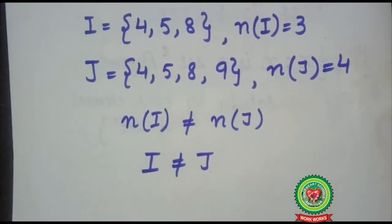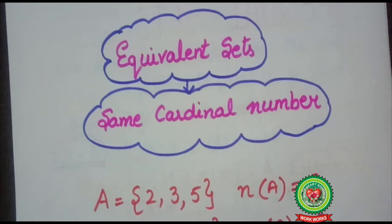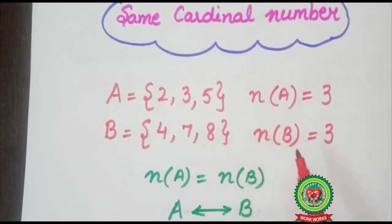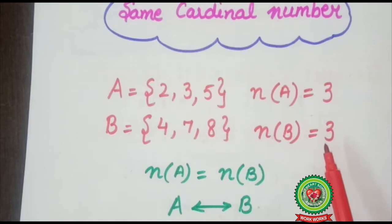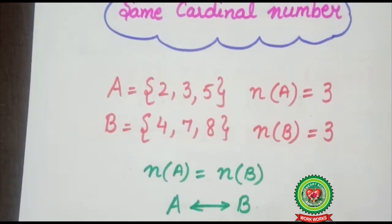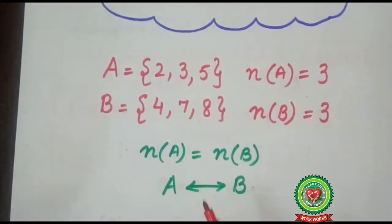Now let's look at equivalent sets. What are equivalent sets? Equivalent sets are sets which have the same cardinal number. In equal sets the elements should be the same, but in equivalent sets only the cardinal number needs to be the same. For example, set A is {2, 3, 5} with cardinal number 3, and set B is {4, 7, 8} with cardinal number 3. The cardinal numbers are the same but the elements are different, so A is equivalent to B. This sign implies the equivalent sign.